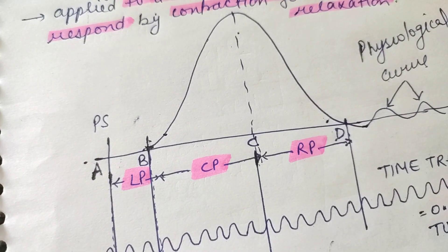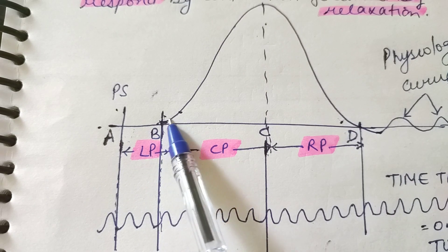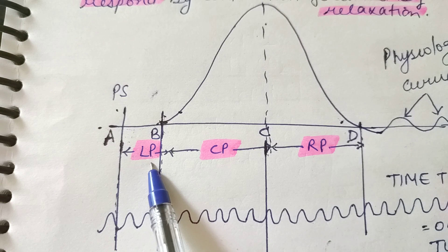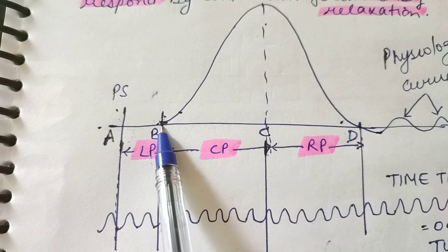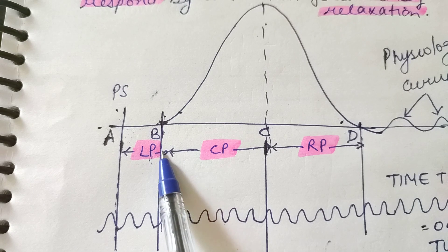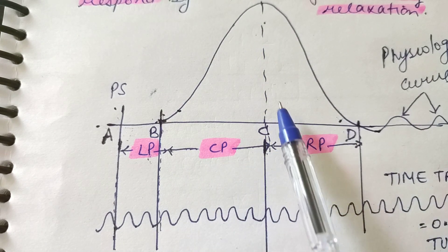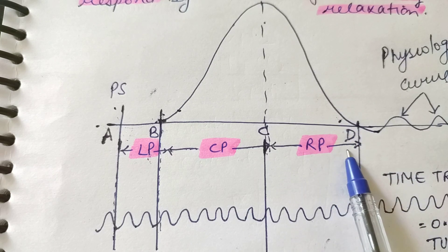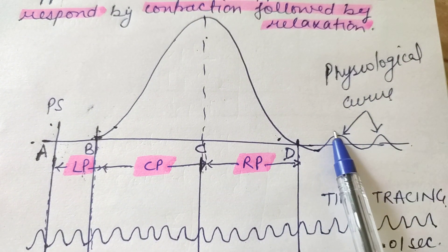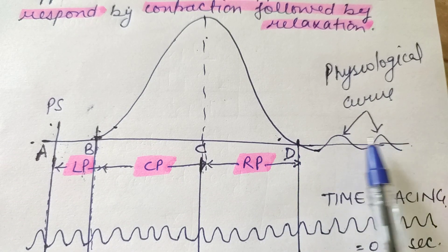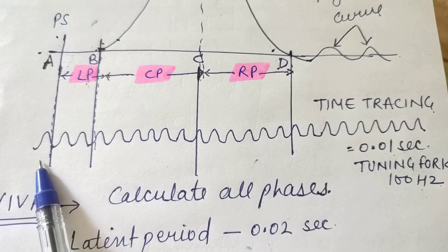This is the graph of simple muscle twitch. PS is the point of stimulation, and the muscle starts contraction from here. The duration between point of stimulation to start of contraction is called the latent period. From the start of the contraction phase to the peak is called the contraction period. From the peak till the end of relaxation is called the relaxation period. Even after relaxation, the baseline is not stable — these curves are called physiological curves, caused by inertia of the lever.